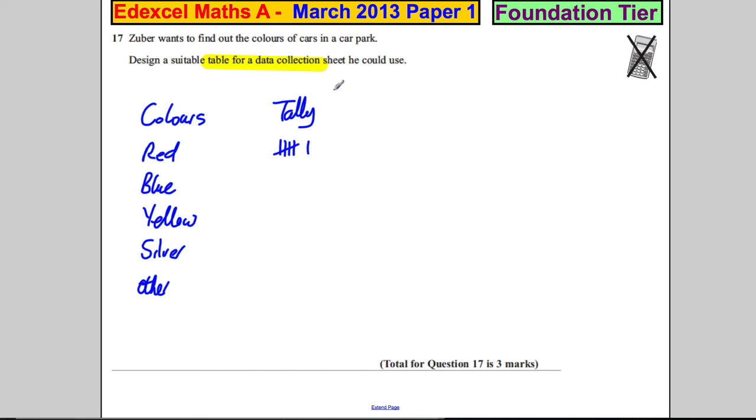You need a tally column and lastly you need to add up your tallies and that's called a frequency or a total column. And in this case, you would have six in there, let's say. So that's all they're looking for there.